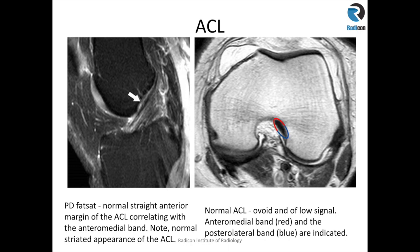The ACL normally almost follows the Blumensaat line, which runs along the roof of the intercondylar fossa. In this image you can see there are two different parts: the anteromedial and the posterolateral. It can be difficult to differentiate between the two bundles, but you may be able to see it in some cases.